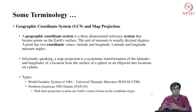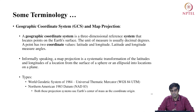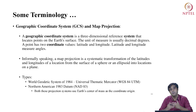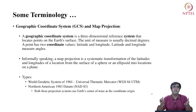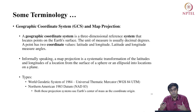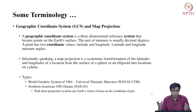One more term to introduce is the geographic coordinate system and map projection, which allows us to provide coordinates to the data. A geographic coordinate system is a three-dimensional reference system that locates points on the earth's surface. The unit of measure is usually decimal degrees, and a point has two coordinate values: latitude and longitude. A map projection is a systematic transformation of latitudes and longitudes from the surface of a sphere or ellipsoid into locations on a plane.